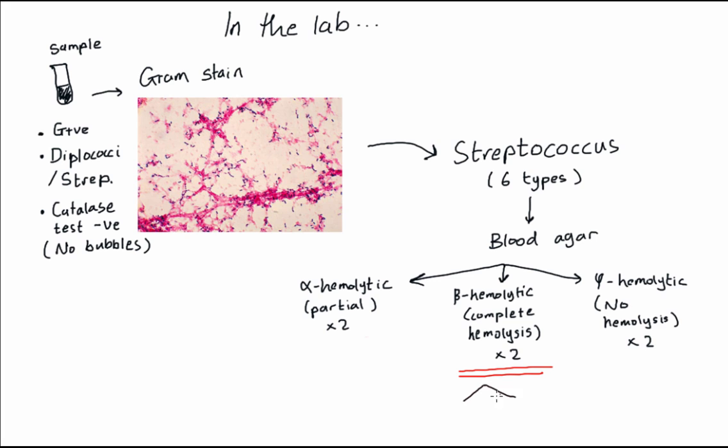Strep pyogenes is a beta-hemolytic streptococcus, meaning it causes complete hemolysis of blood agar. There are two streptococci in this category: strep pyogenes and strep agalactiae.